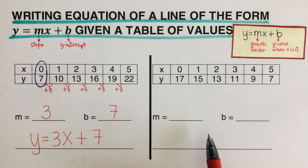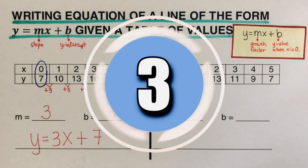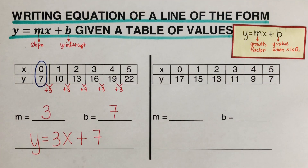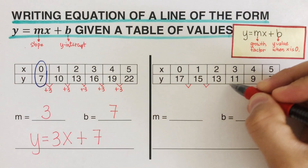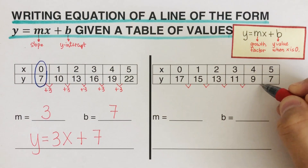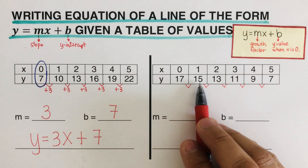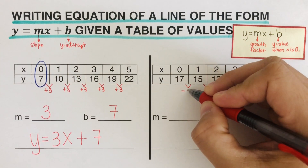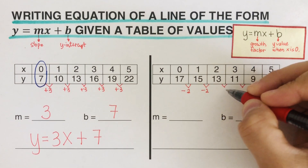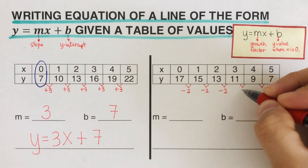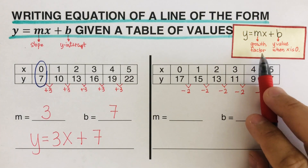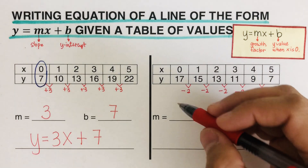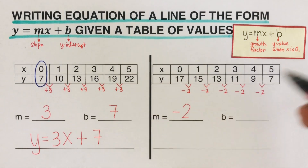Pause this video and try the next problem on your own. When you're done, check your answer. In this problem, from 17 to 15 we are subtracting 2 each time: 15 minus 2 is 13, 13 minus 2 is 11, 11 minus 2 is 9, 9 minus 2 is 7. So the growth factor or slope is negative 2, making m equal to negative 2.